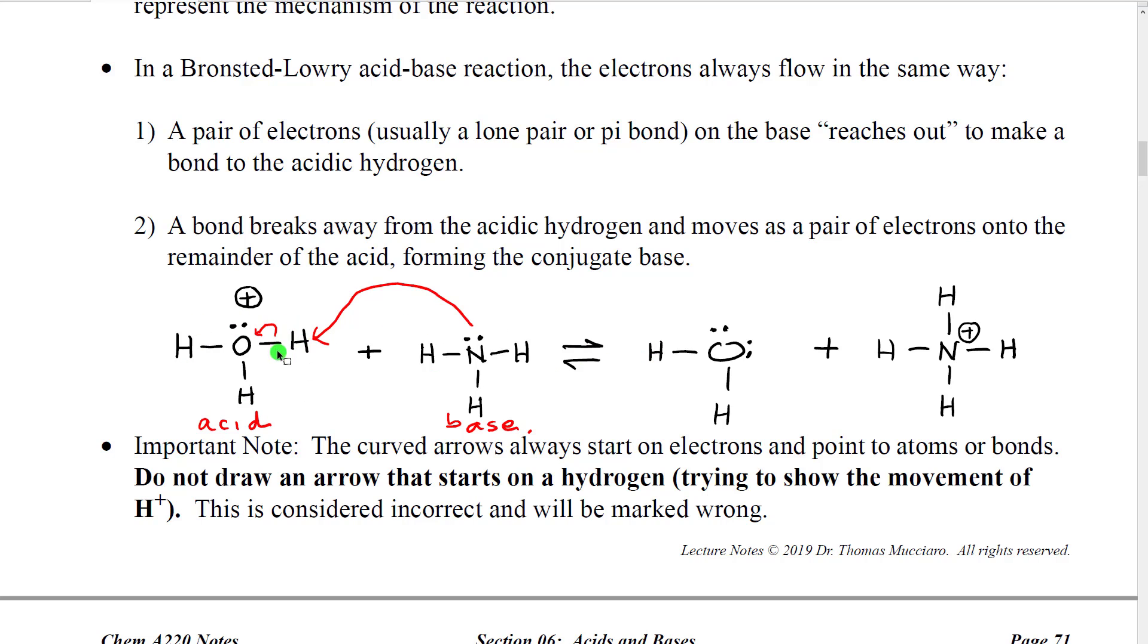Then we would just draw the result. So this species would now have one fewer hydrogen, so we have no hydrogen here. This pair of electrons would become a second lone pair. On this side, this species would no longer have a lone pair. Instead that lone pair would now be a bond between two atoms. The hydrogen would move onto the top of that bond and then we would have to fix our formal charges and everything. One very important thing to notice is that the arrows always start on electrons. They start on electrons and they point to atoms or they point to bonds. We never draw an arrow starting on an atom and pointing toward electrons.